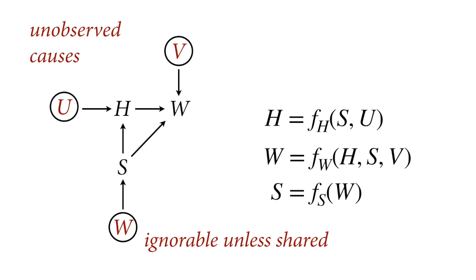We could draw unobserved other causes on each variable — every DAG implies these, even if you don't draw them every time. When you write the generative function, these variables are typically stochastic because we're imagining there are unmodeled, unobserved, and often unmeasurable other influences generating variation in each measured variable. Luckily, unobserved causes are ignorable unless they're shared among the measured variables.